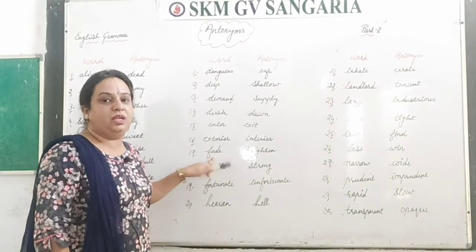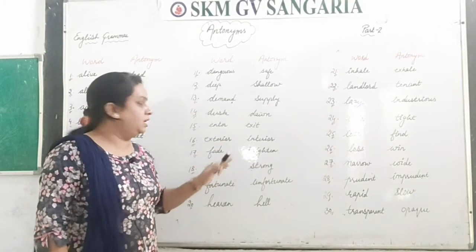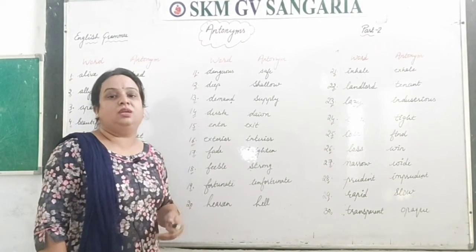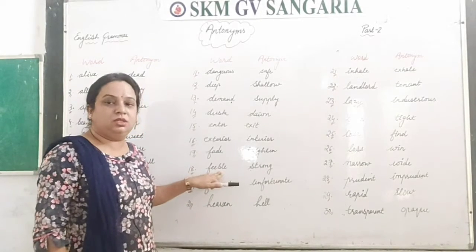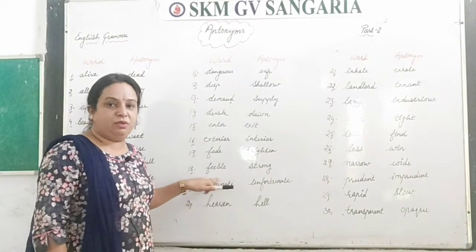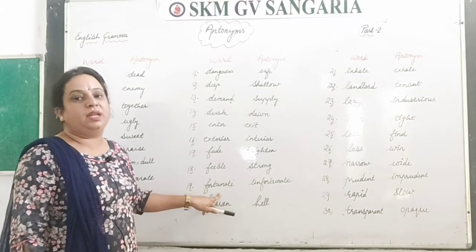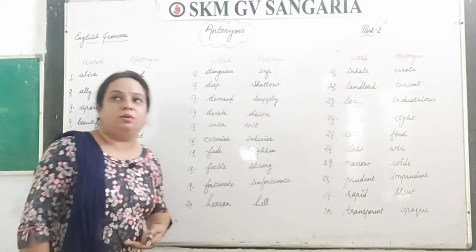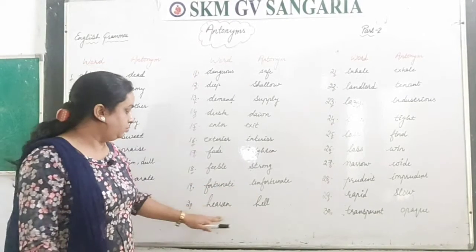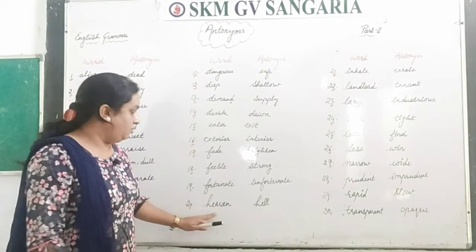Next is 'fade,' F-A-D-E. We say a dress has faded — fade means to become light, and the opposite is 'brighten,' B-R-I-G-H-T-E-N. Next is 'feeble,' F-E-E-B-L-E. Feeble means weak, W-E-A-K. So feeble is a synonym of weak, and the antonym of feeble is 'strong,' S-T-R-O-N-G. Next is 'fortunate,' F-O-R-T-U-N-A-T-E, which means lucky or having good luck. The opposite of fortunate is 'unfortunate.' Next is 'heaven,' H-E-A-V-E-N, and the opposite is 'hell,' H-E-L-L.